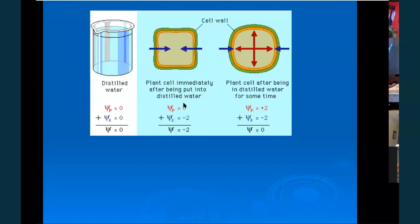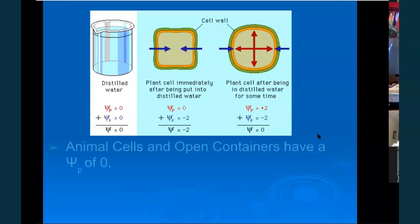When placed in distilled water, initially this cell has a pressure potential of zero but has a lot of solutes, so a solute potential of maybe negative two, making a water potential of negative two. After sitting for some time, water comes in and begins to dilute the solute, also expanding the cell and putting pressure on the cell walls. When water potential reaches zero, the two have an equal tendency to move and the cell is at equilibrium — the solute potential is cancelled by the pressure potential.